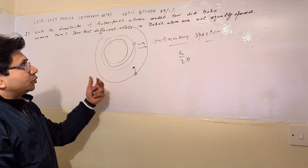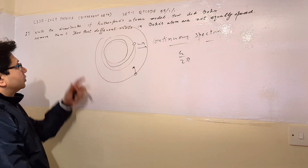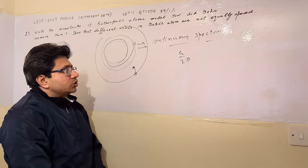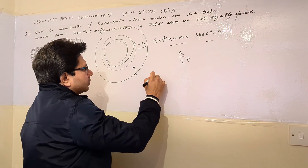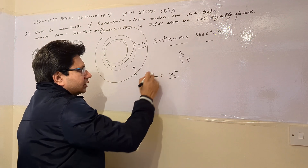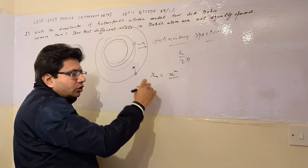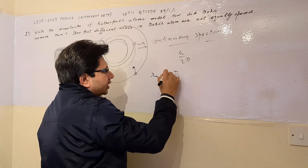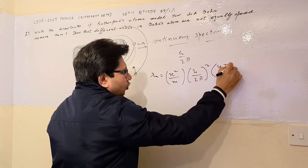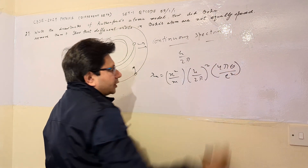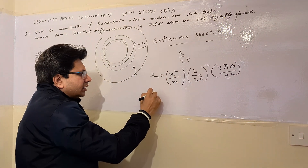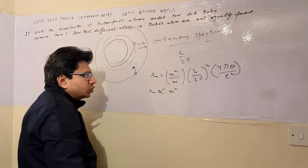Now for the last part, we have to show that different orbits in Bohr's atom are not equally spaced. For this we use the formula: R_n, the radius of the nth orbit, equals n² divided by m, multiplied by (h/2π)², multiplied by 4πε₀ divided by e². Apart from n, all other terms are constants.